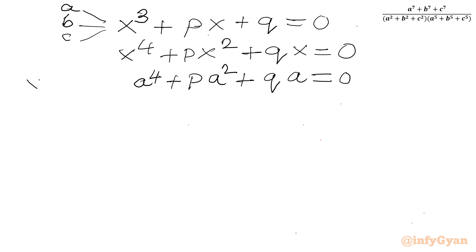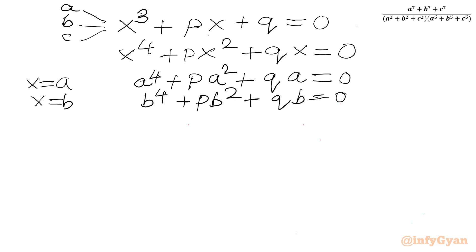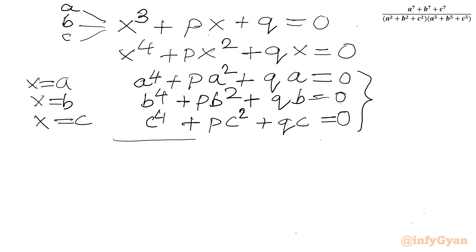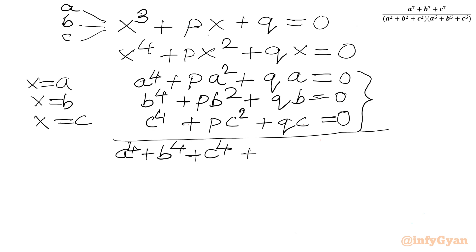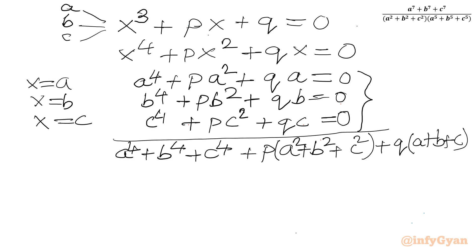Substituting X equal to B: B to the fourth plus P times B squared plus Q times B equals 0. And substituting X equal to C: C to the fourth plus P times C squared plus Q times C equals 0. So we have generated three equations. Adding them gives A to the fourth plus B to the fourth plus C to the fourth plus P times the quantity A squared plus B squared plus C squared plus Q times A plus B plus C equals 0.